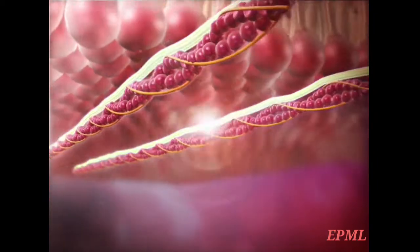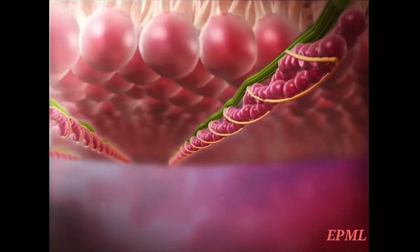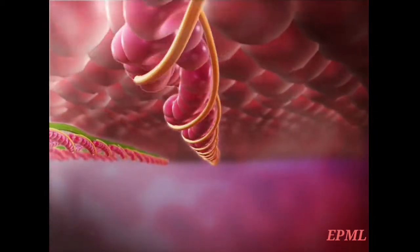Dystrophin connects the sarcolemma to actin filaments and stabilizes the sarcolemma as the muscle contracts.